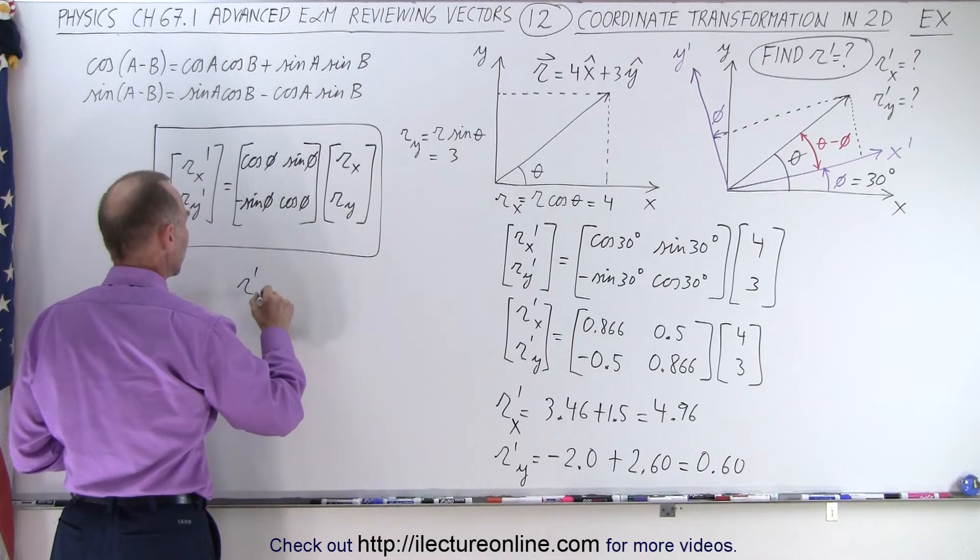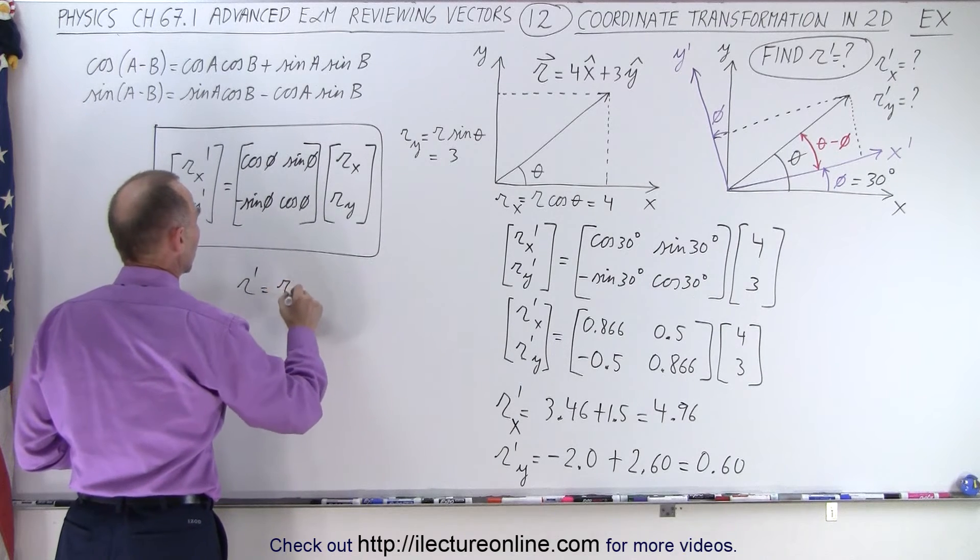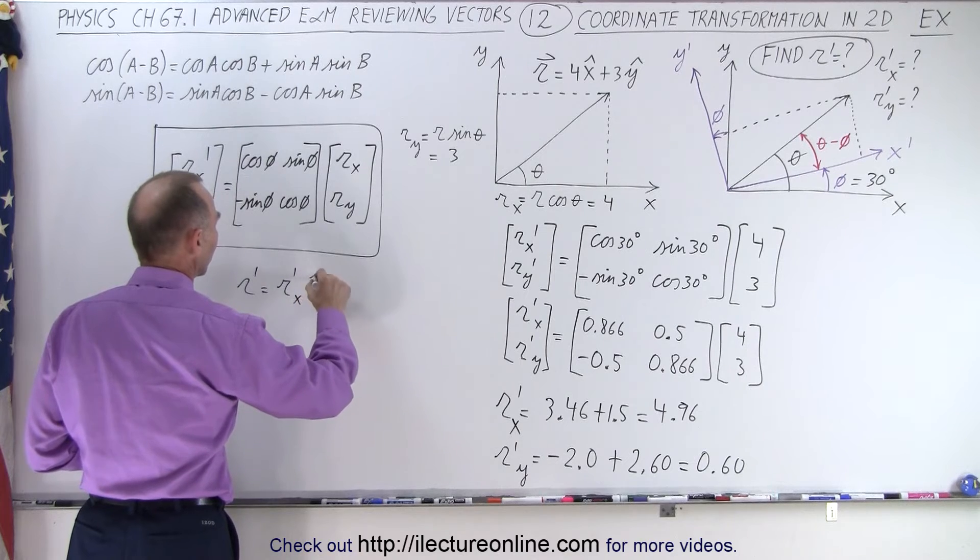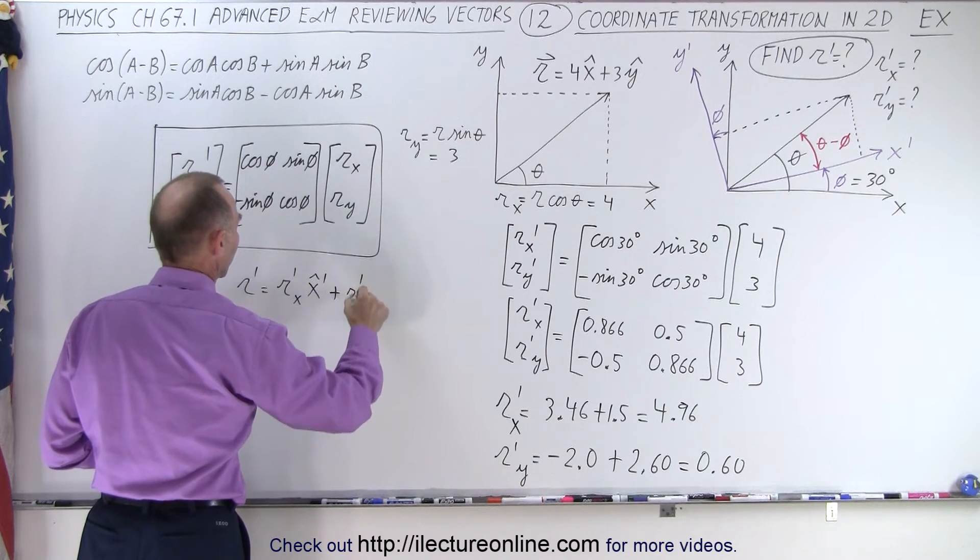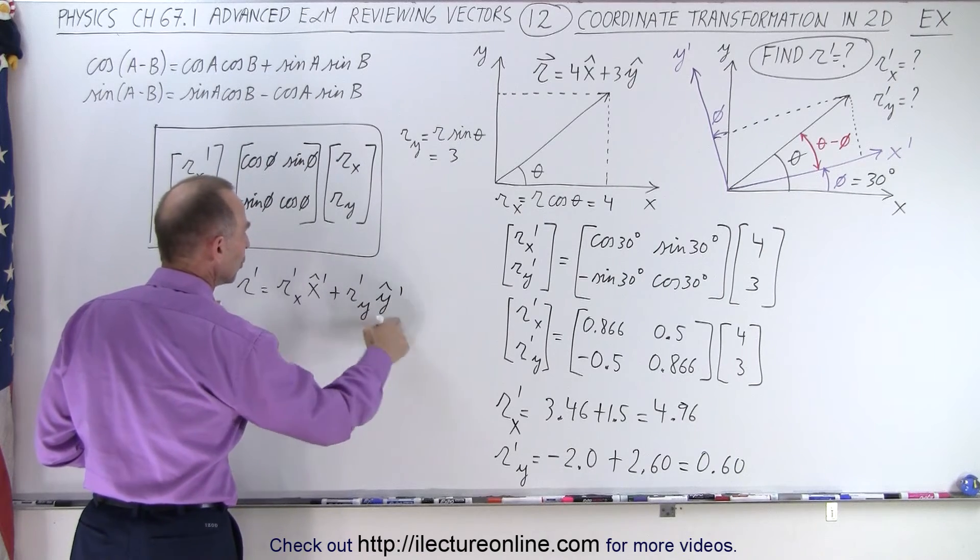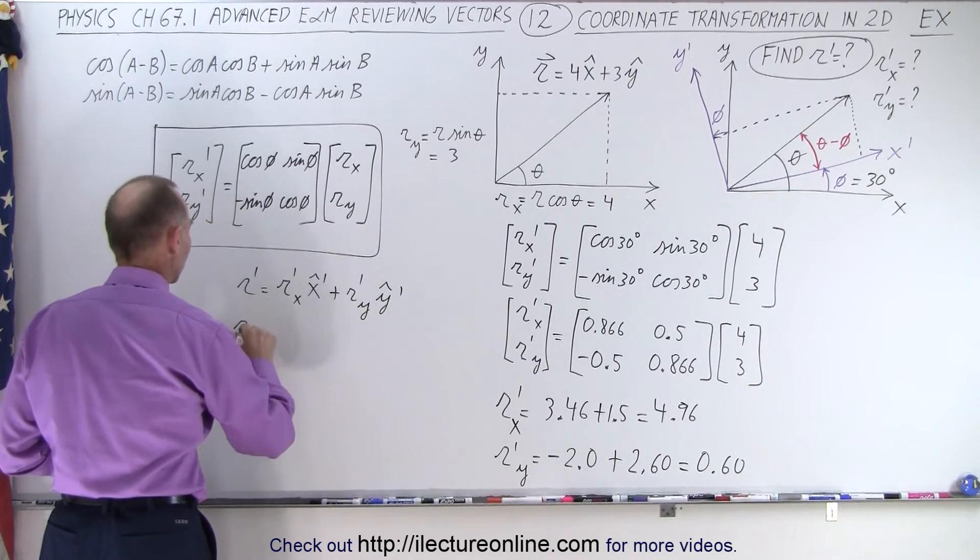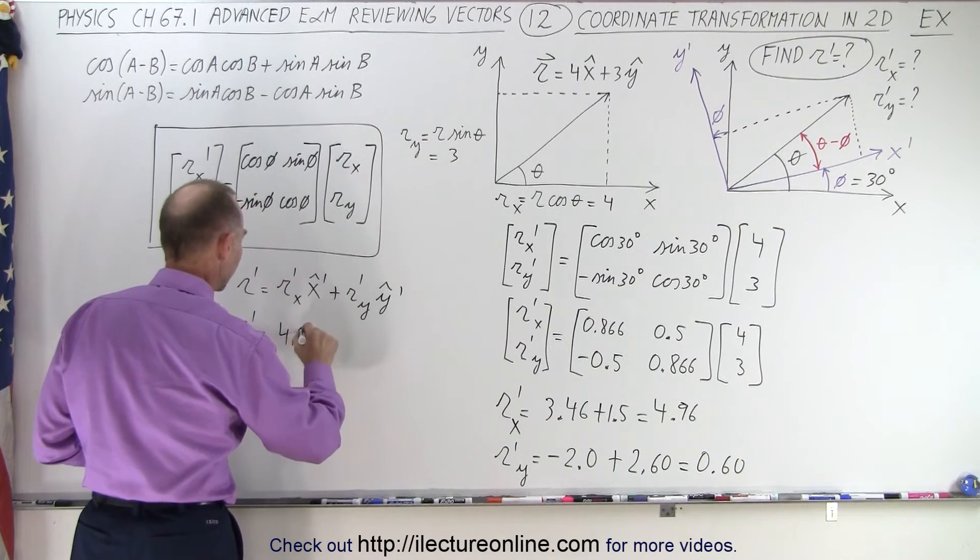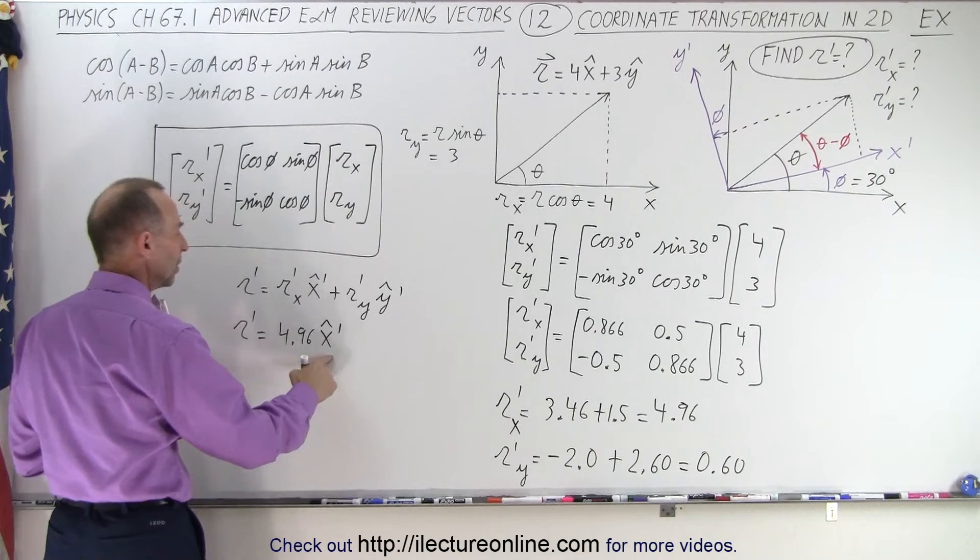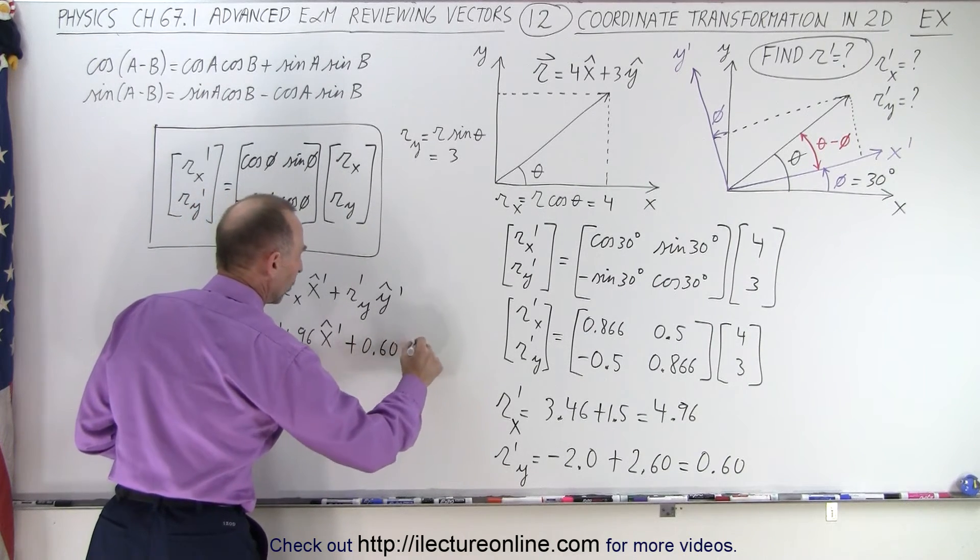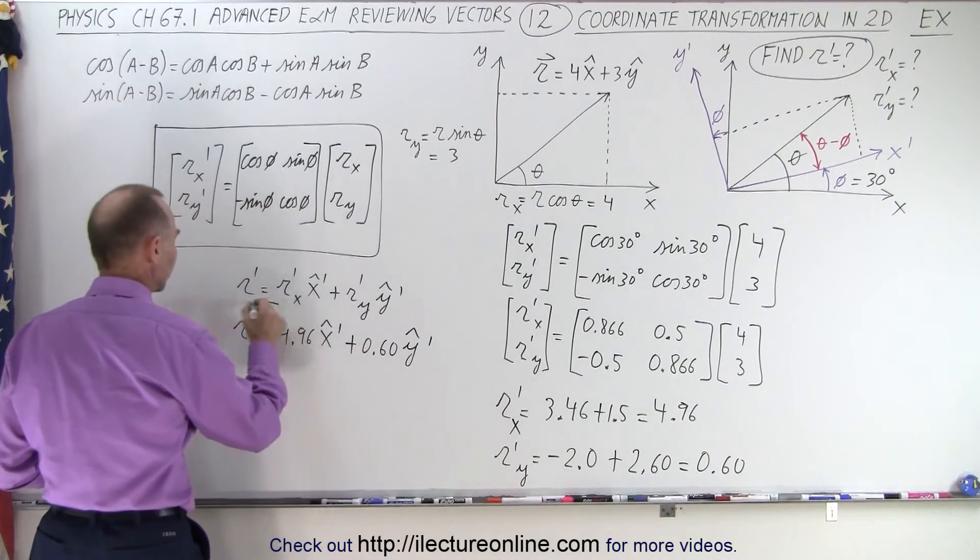And let's define now our new vector. R' is now equal to R' in the X direction in X' plus R' in the Y direction, Y' so now it's relative to the new axis. And so we could say that R' vector is equal to 4.96 in the unit vector in the new X direction plus 0.60 Y unit vector in the Y direction. And there's our new vector.